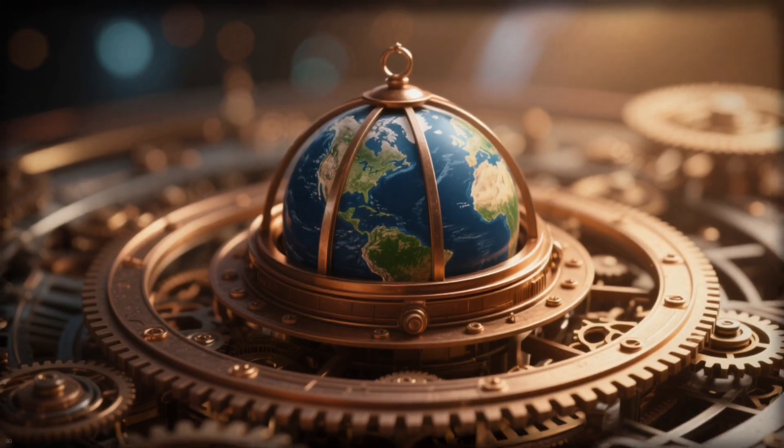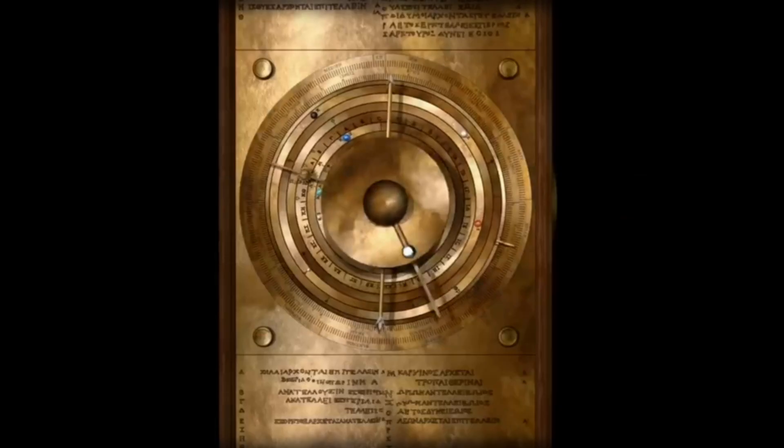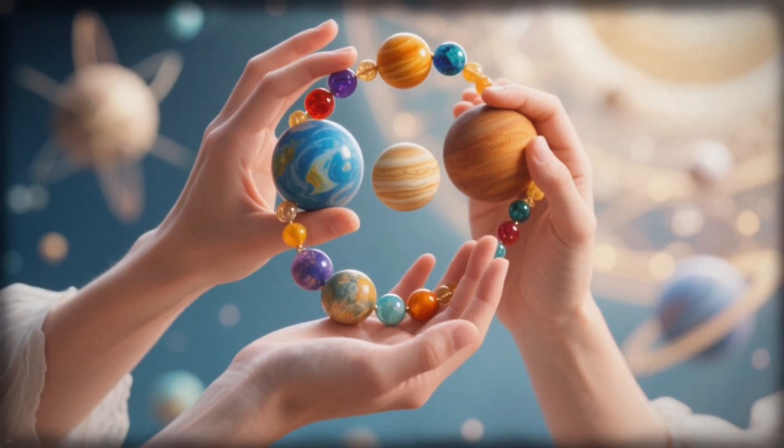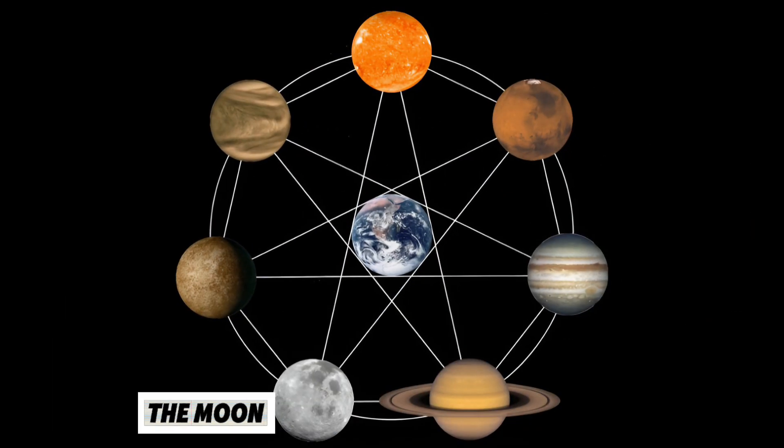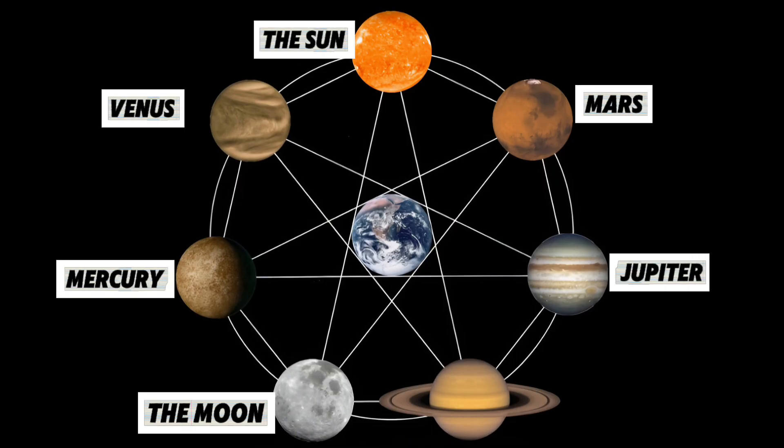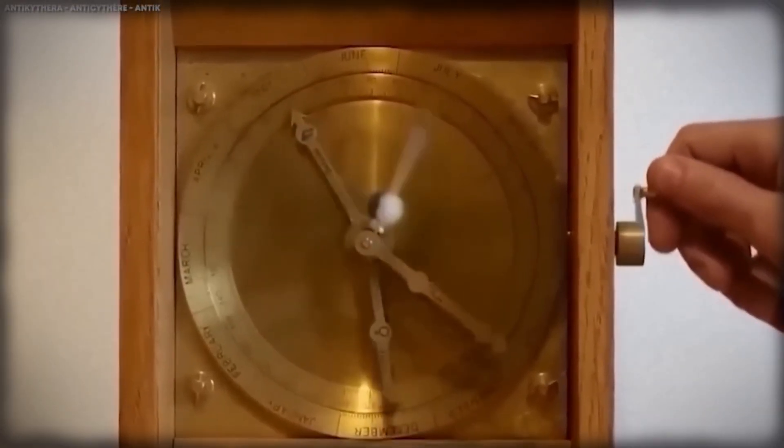At the very center sits Earth, a small dome surrounded by concentric rings of bronze. Around it, slender arms sweep in silence, each carrying a bead representing one of the seven known celestial bodies. With every rotation of the crank, the entire universe unfolds before your eyes.